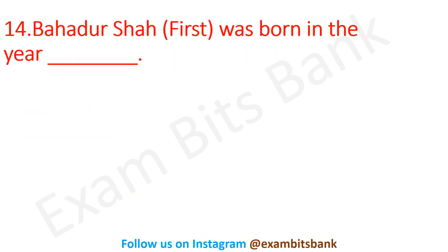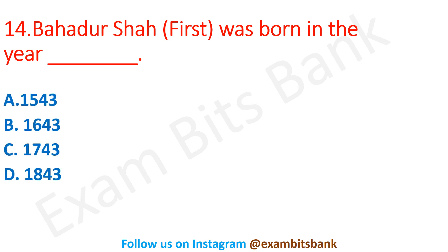Next question: Bahadur Shah was born in which year? Options are 1543, 1643, 1743, or 1843. The correct answer is option B — 1643. Bahadur Shah was the seventh Mughal emperor of India, born in the year 1643.